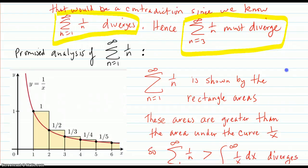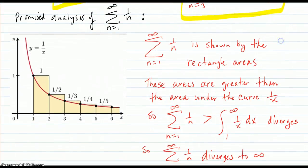And here's your analysis of the series of 1/n. This series is shown by the sum of the rectangle areas. See this? One. That's a one by one. One-half because it's one-half. One-third, one-fourth height, one-fifth. And this is the curve 1/x.